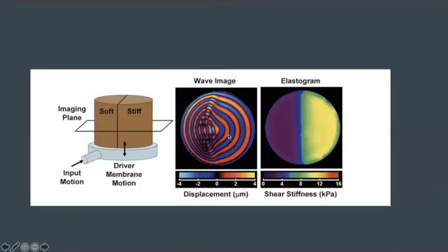How it works: a short wave indicates stiff tissue, a long wave indicates soft tissue. The distance between the waves is measured in micrometers, very very tiny displacement.